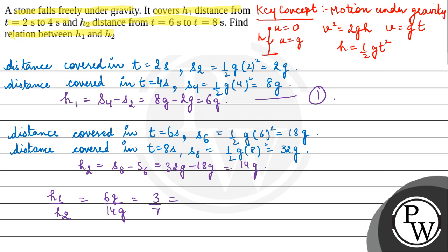Dividing 3 by 7 equals 0.428. So we can say that h1 equals 0.428 times h2, or h2 equals 2.33 times h1.